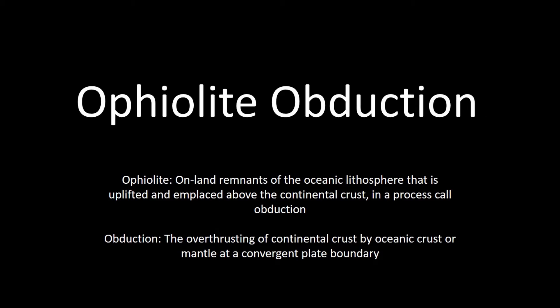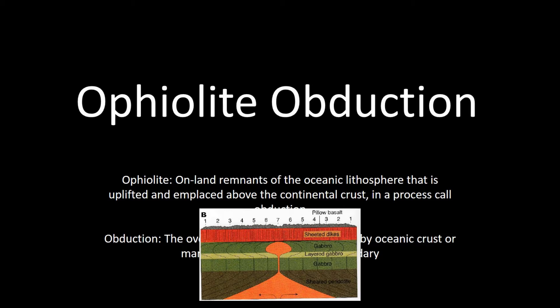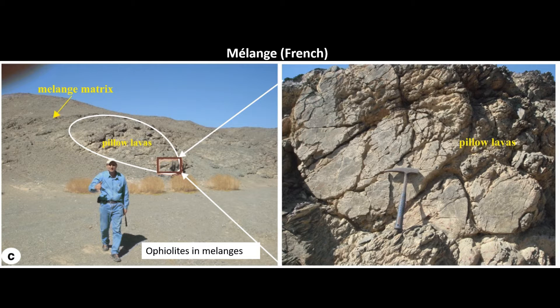As it turns out, your answer is ophiolite obduction. Ophiolites are on-land remnants of the oceanic lithosphere that is uplifted and emplaced above the continental crust in a process called obduction. The most common thing people associate with ophiolites is this classic stratigraphic sequence as seen on the screen. What we often see in real life are ophiolites occurring in melange, which are large-scale breccias commonly found in mountain ranges.